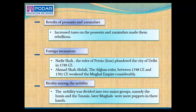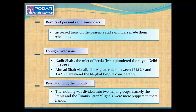The next point is the revolts of peasants and zamindars. The increased tax on peasants and zamindars made them rebellious. Many revolts broke out in parts of northern and western India. They were now able to seize the resources of the region to strengthen their position, which ultimately led to a shift in political and economic authority. Soon the Mughal Empire gradually fragmented into a number of regional states.